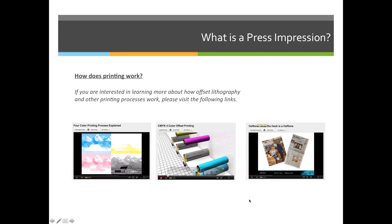The last video is going to talk about, since we're only printing with four colors usually — cyan, magenta, yellow, and black — how are we able to create a rainbow? How can we create green when we're not printing with green? How do we make purple? How do we make 50 different shades of blue to use in an ocean scene? And we do that through the use of halftones.